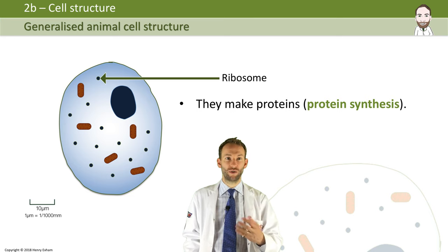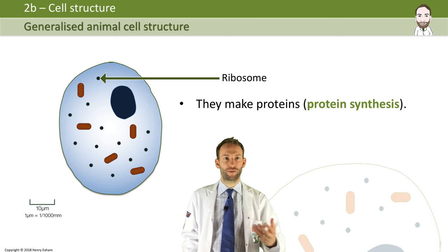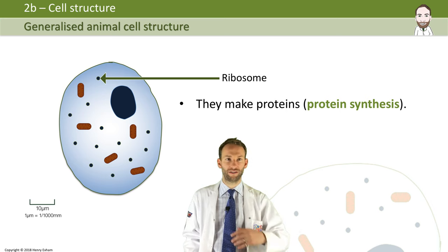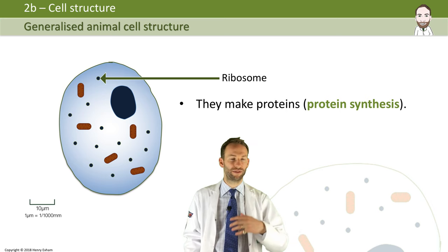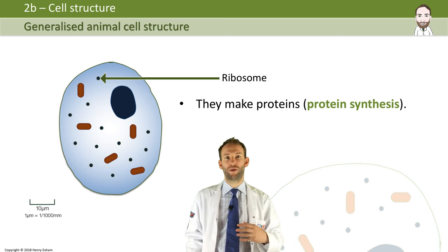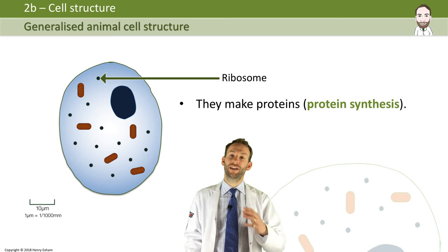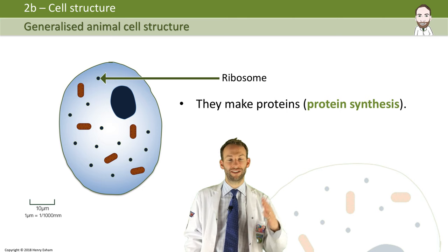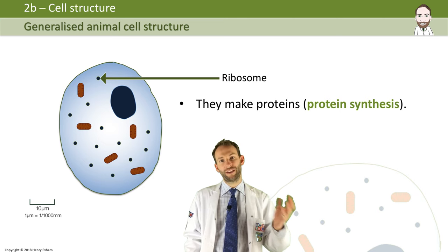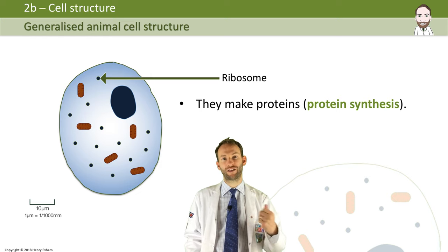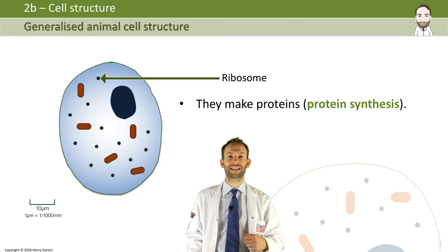Really, what cells do is they make lots of proteins. Proteins can be used for all sorts of things — they are hormones and enzymes, and structures within the body are built out of proteins. So the cell's job really is to build proteins, and it does that using instructions found in the nucleus in the DNA. The ribosomes are the things that can read those instructions and start to make the proteins for that cell.